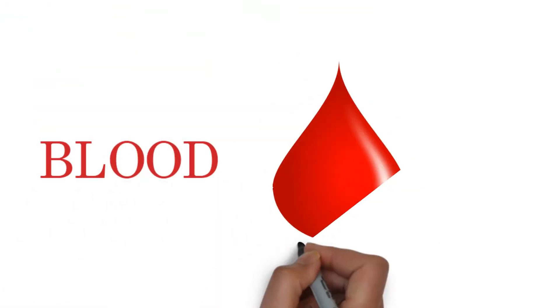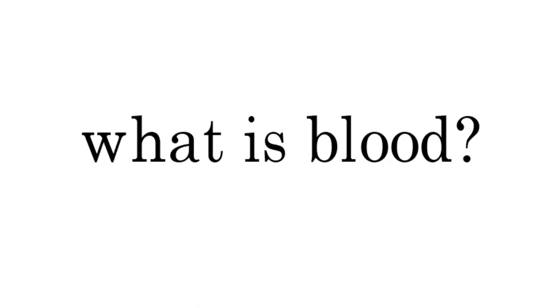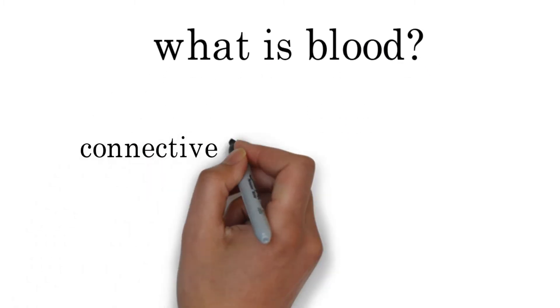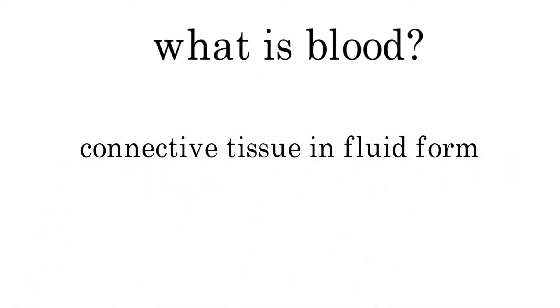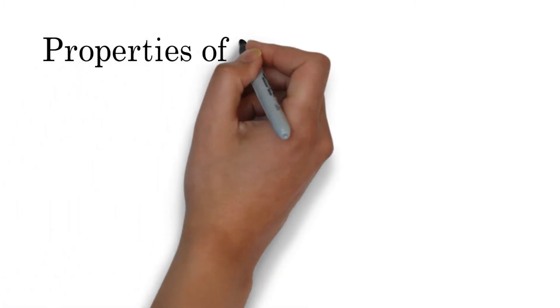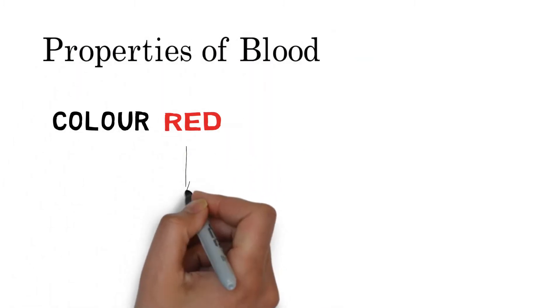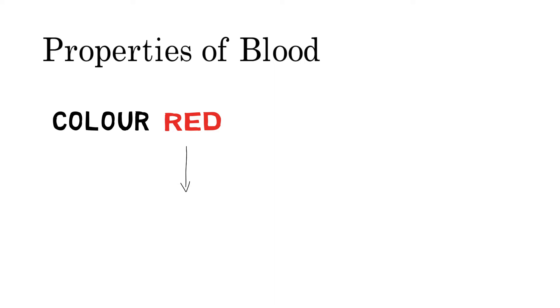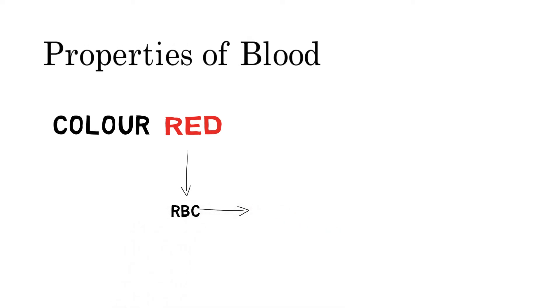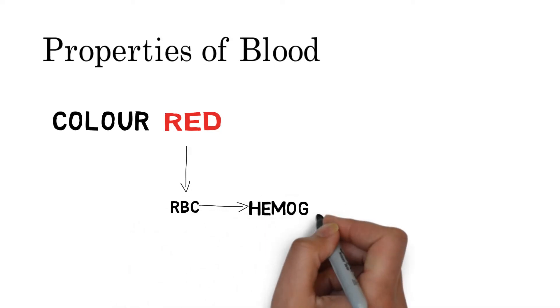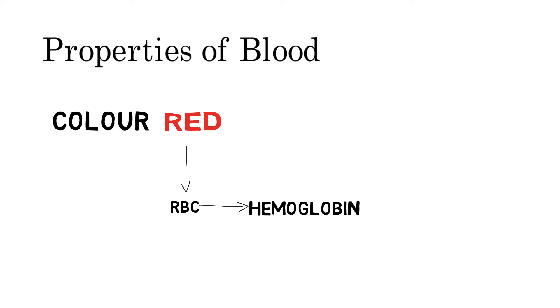Blood is the most essential unit of life. Blood is connective tissue in fluid form which runs through our blood vessels in the body. Blood is red in color because red blood cells carry a pigment called hemoglobin which makes it red.